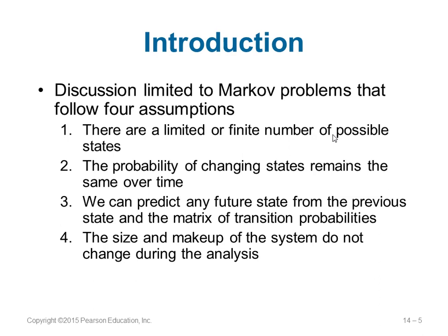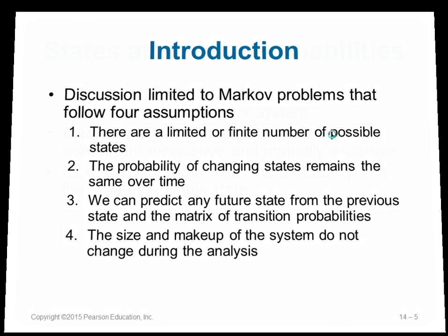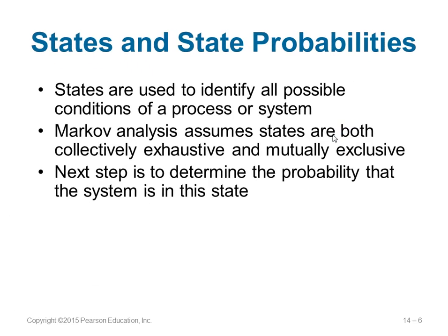We can always predict the future state based on the current state and the matrix of transition probabilities. Point four: the size and makeup of the system do not change while you are doing your analysis. A state indicates the current condition or any other condition of your system or process.